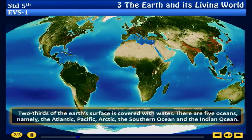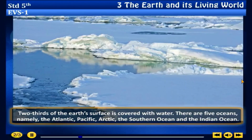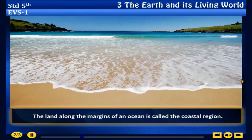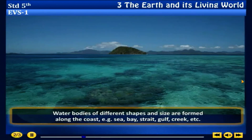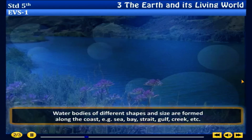Two thirds of the earth's surface is covered with water. There are five oceans: namely the Atlantic, Pacific, Arctic, the Southern Ocean and the Indian Ocean. The land along the margins of an ocean is called the coastal region. Water bodies of different shapes and sizes are formed along the coast — for example, sea, bay, strait, gulf, creek, etc.